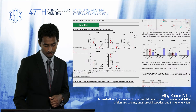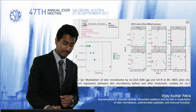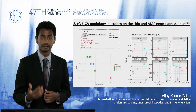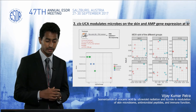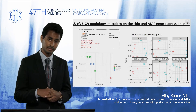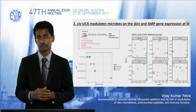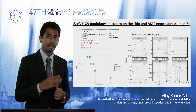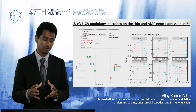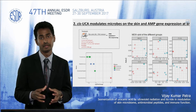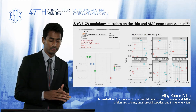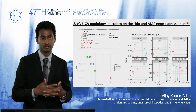Once we knew that, the next experiment investigated what happens after urocanic acid is formed in the skin. We used different radiation sources — UVB, UVA, and PUVA again — and this time we also applied cis-UCA topically on the dorsal skin of the mice. Eight hours later, to exclude dead or damaged bacteria, we used a treatment called PMA (propidium monoazide), which excludes dead or damaged bacteria from sequencing or PCR.